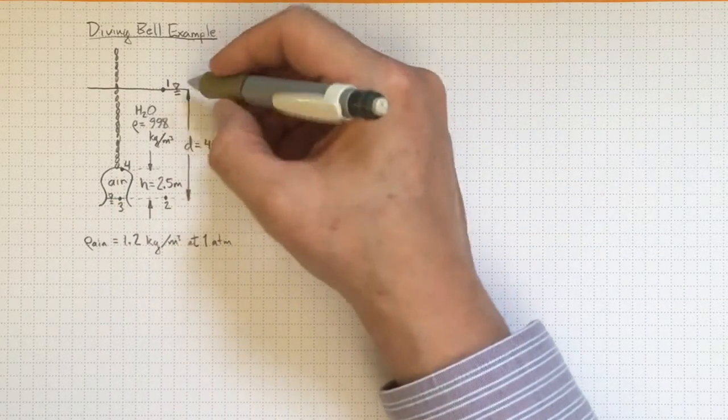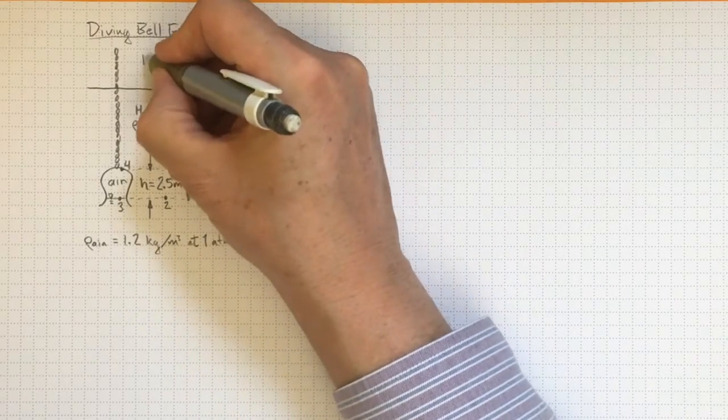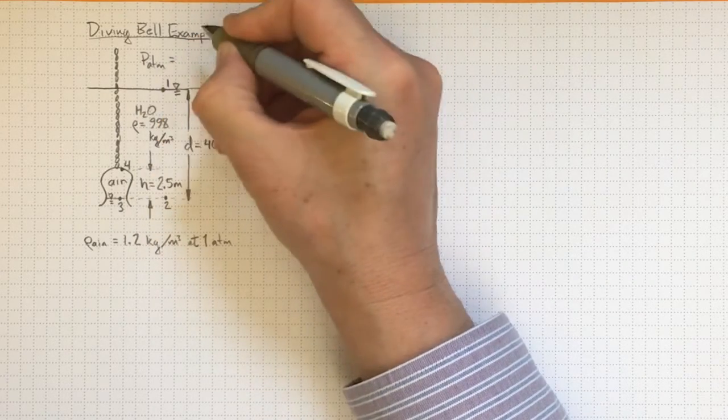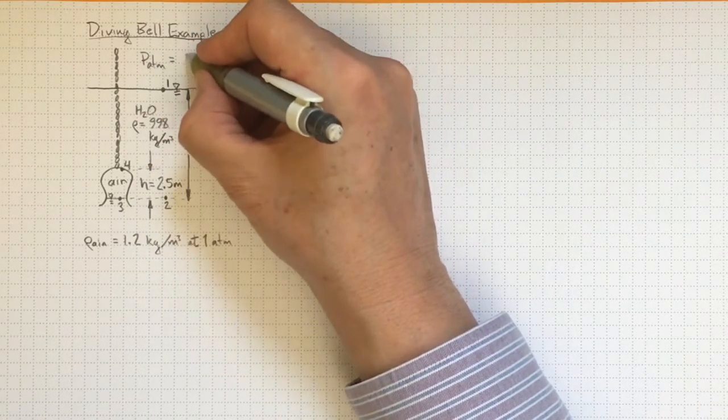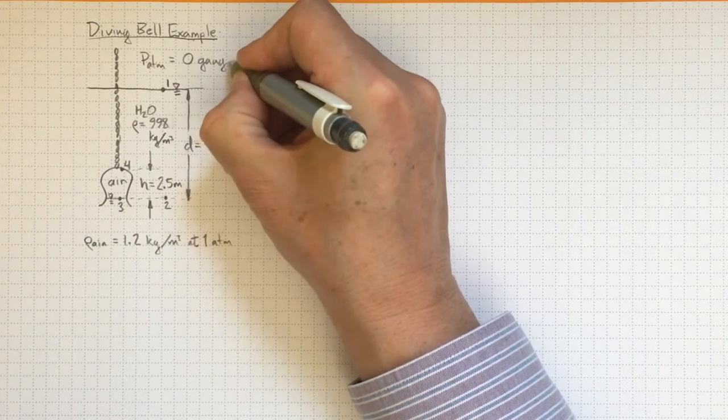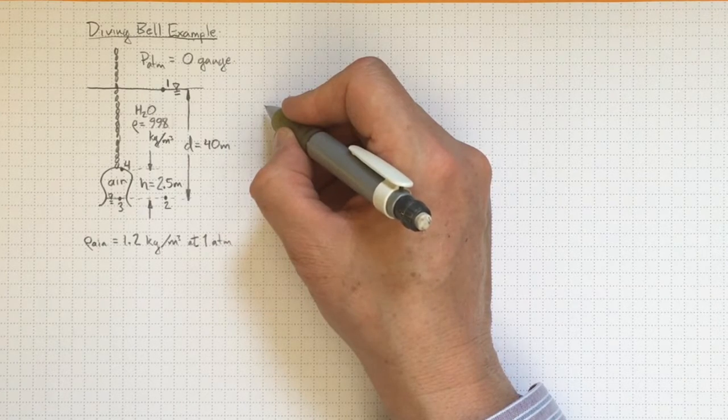The surface of the water is up here at location 1, and the air up above it is at atmospheric pressure. Because it's easier to work in gauge pressure, we'll just say that the atmospheric pressure is zero gauge, and that'll help us in all sorts of our fluid mechanics work.